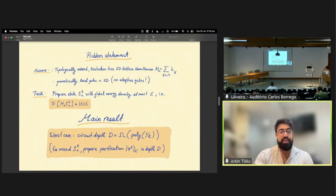Now, the task at hand will be, given some global energy density epsilon, we would like to prepare some state rho whose energy density is at most epsilon. Now, our main result is that in the worst case, one can only hope to prepare such a low energy state rho epsilon using a circuit of depth polynomially in 1 over epsilon.